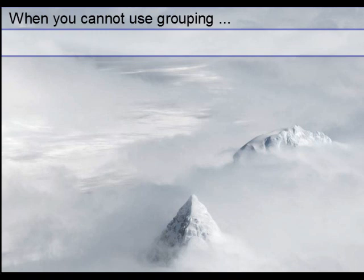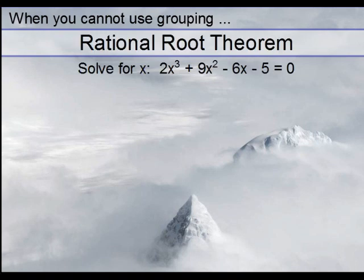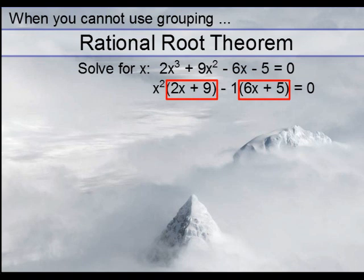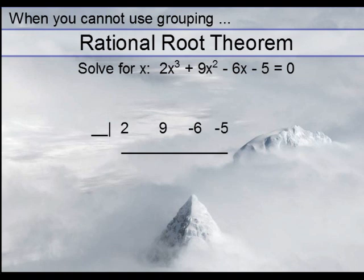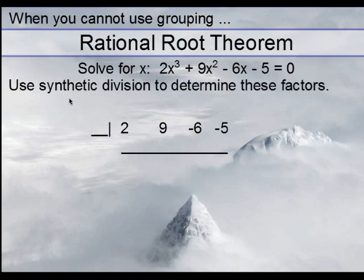So, what if you get a problem which you can't use grouping? Well, then that's when we use the rational root theorem. Say we have this problem here. If you tried to group, we take out x squared from the first two. Here, only a negative 1 comes out and you'll notice these two binomials are not the same. That's what prevents us from using grouping. So, we're going to have to factor this out on our own using synthetic division.